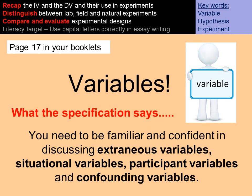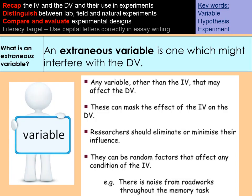We've talked about variables quite a lot. You need to be confident discussing extraneous variables, situational variables, participant variables, and confounding variables. An extraneous variable is something other than the IV that will have an effect on the DV and can mask the effect the IV has on the DV. Researchers should always try to eliminate or minimize these — they can be random factors such as noise outside when you're trying to do a memory test.